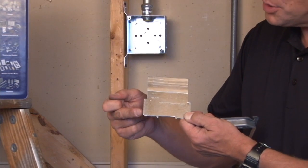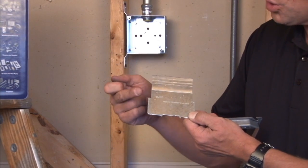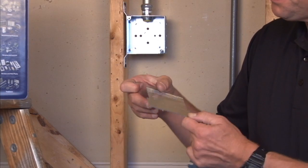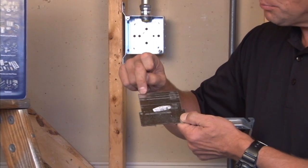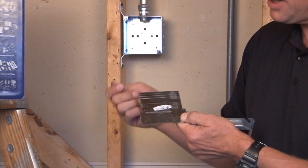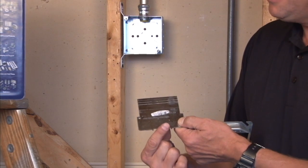They're made for both shallow inch and a half boxes or two and an eighth inch deep boxes, and they come with break-off tabs for the desired plastering that's going to be attached.